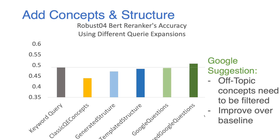Finally, we try to add both concepts and structures to the initial keyword query. This is done by using query suggestions from Google. As shown in the paper, we have an example showing that Google-suggested queries both contain new concepts and are in natural question format. The light green bar shows the original Google-suggested questions, and the next one shows filtered Google questions. Once we filter off-topic concepts, the performance of the suggested queries can actually be better than the initial keyword query. This means that adding concepts and structures does improve performance, but we have to make sure that no noisy topics are added to the query.